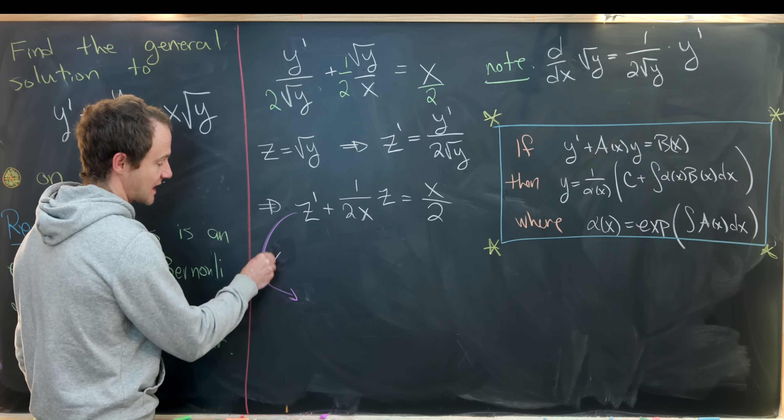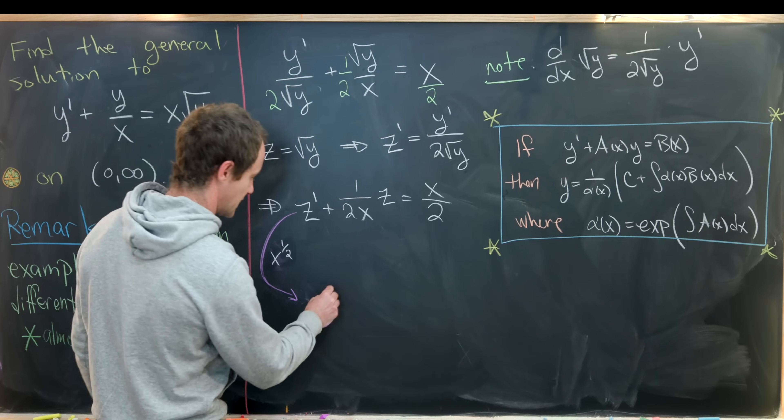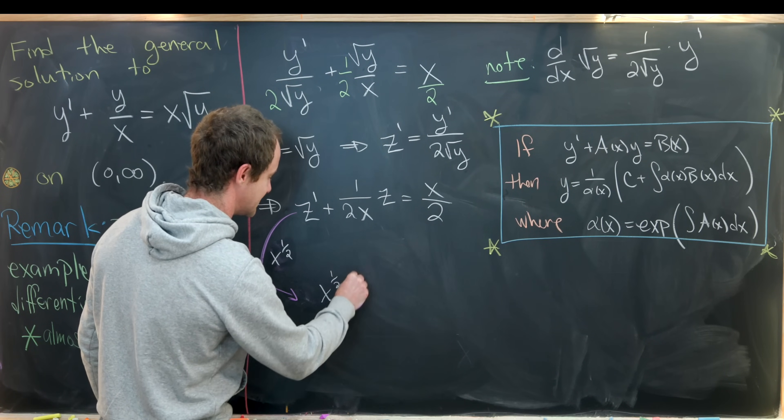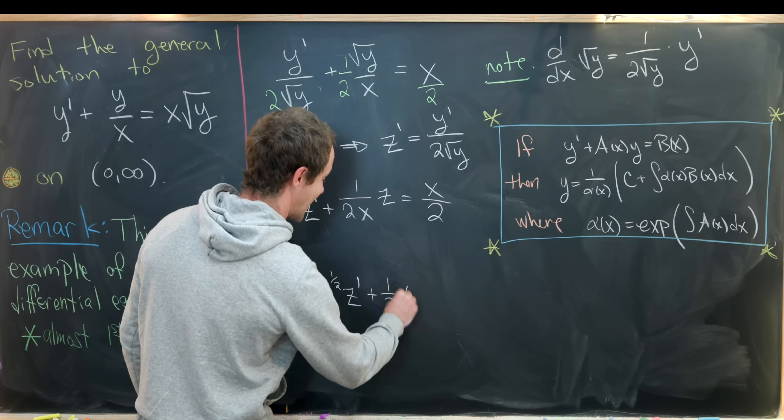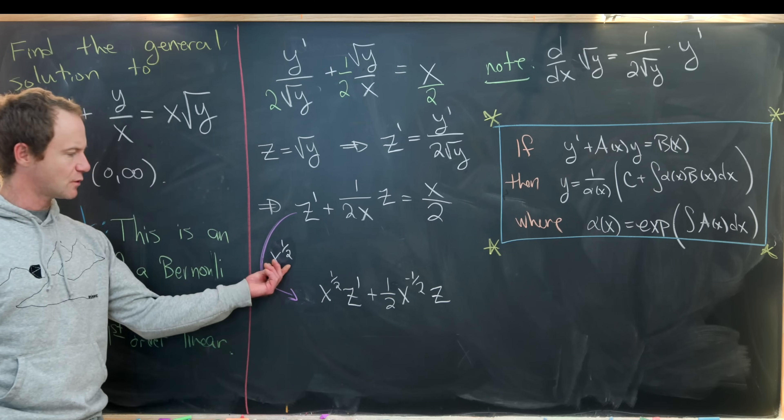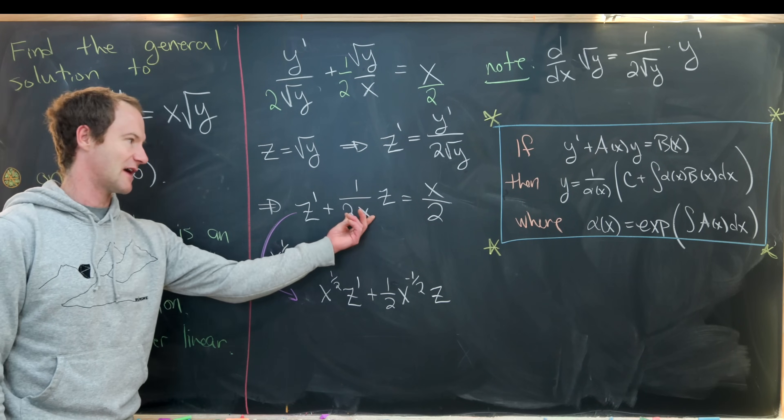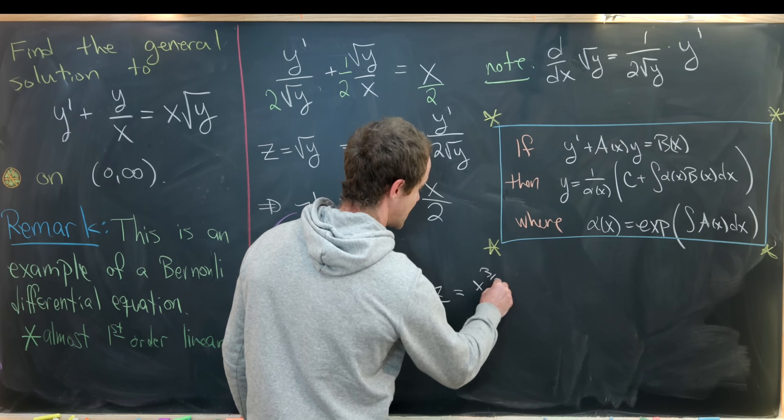Let's take this function and multiply it by the square root of x, or x to the half power. We'll have x to the half times z prime plus one half x to the minus half times z. That's what we get from distributing this x to the half over onto this term, equals x to the three halves over two.